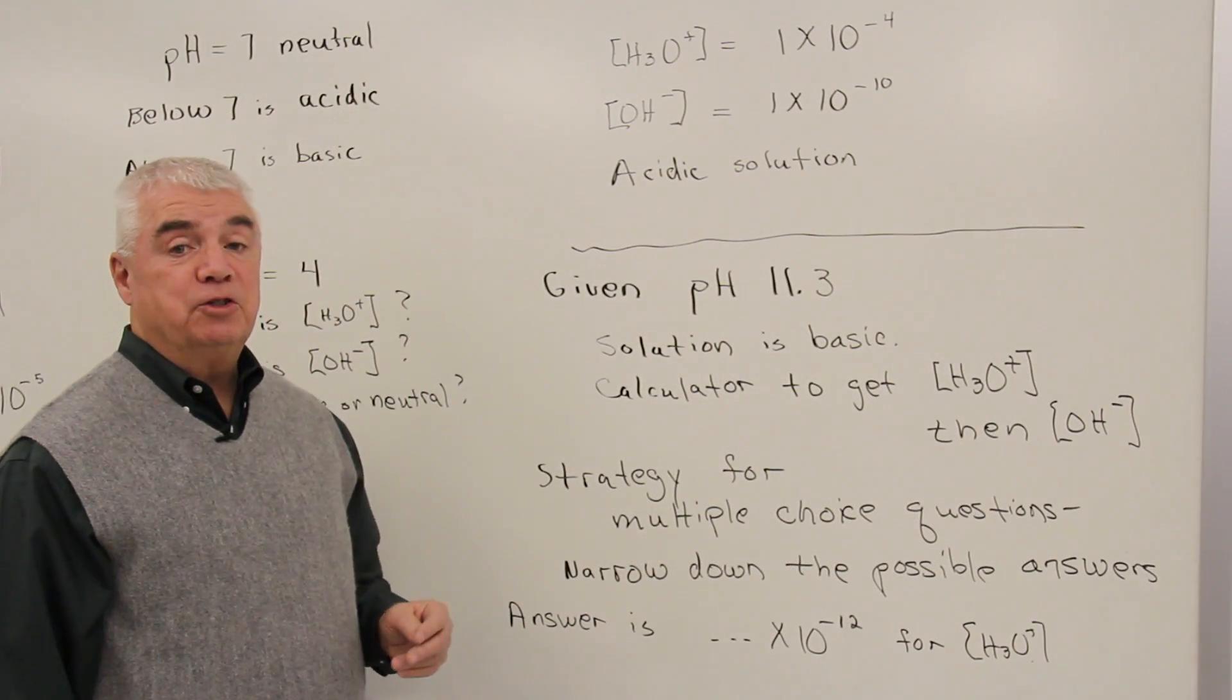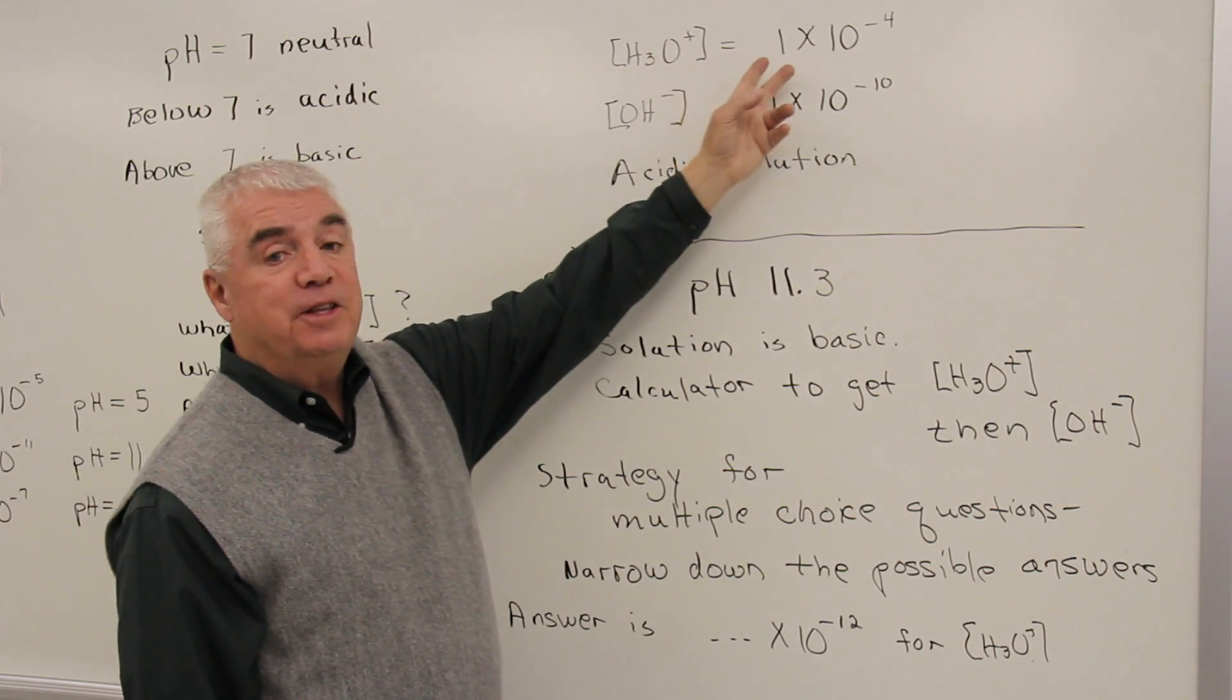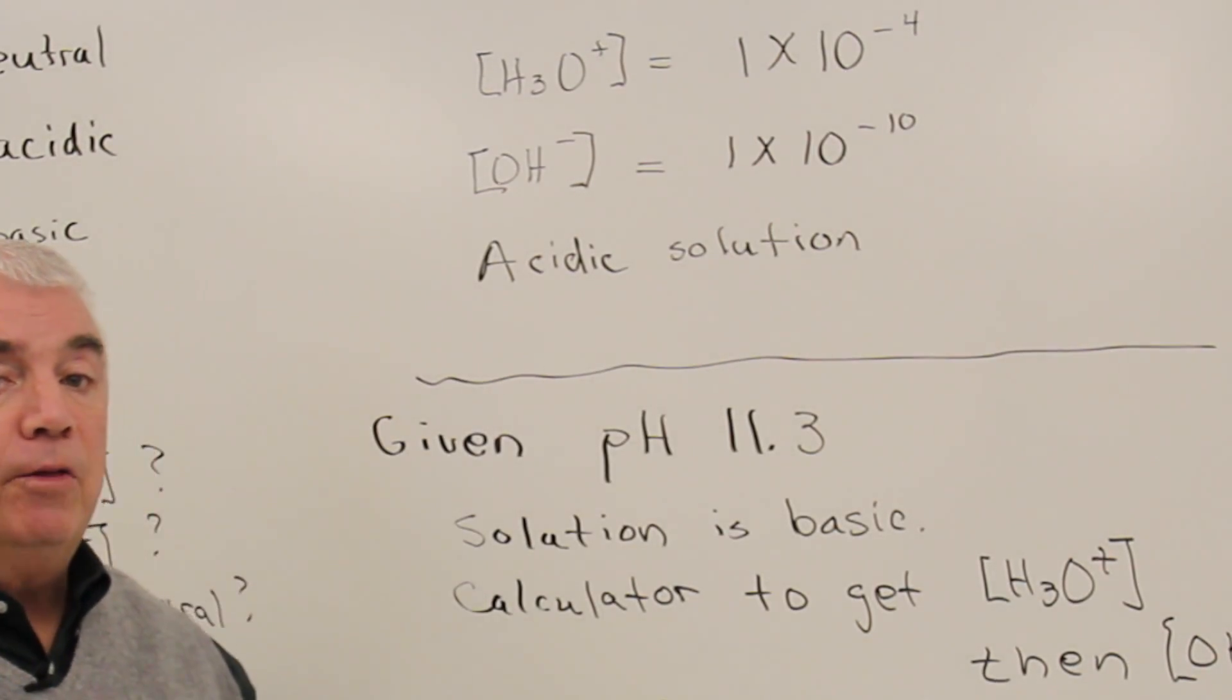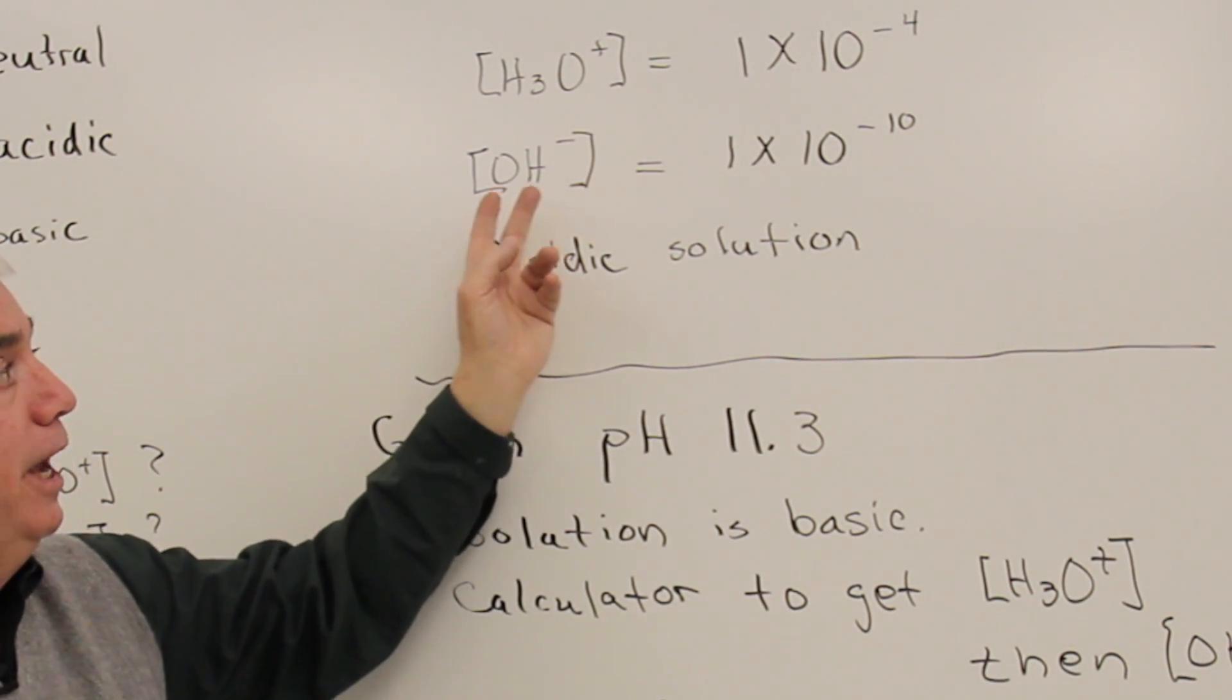We said that we had a solution where the pH is equal to 4. Well, then that means that the H3O plus concentration is 1 times 10 to the minus 4. Using the ion product of water, we could solve for OH.